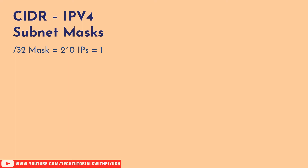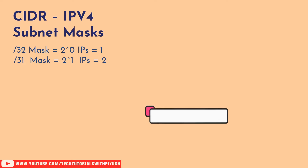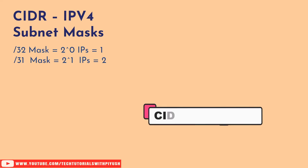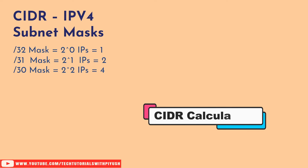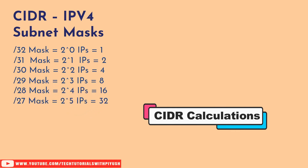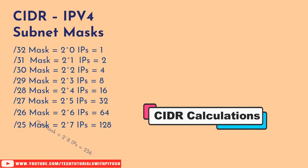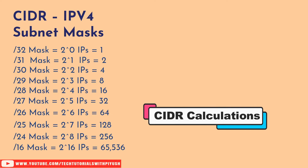For a /32 subnet mask, it has 2 to the power 0 IPs, which equals 1. This is how we calculate the number of IPs in a subnet mask. A /31 mask has 2 to the power 1, which is 2. You reduce one number from the mask and add one to the power notation. So for /30, we have 2 to the power 2 IPs, which is 4. This continues for each mask: /26, /25, /24, and so on.